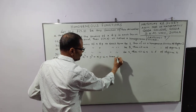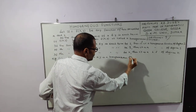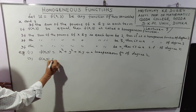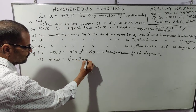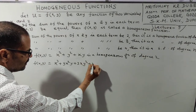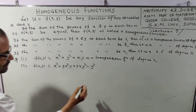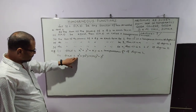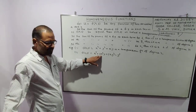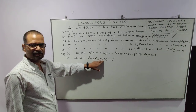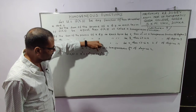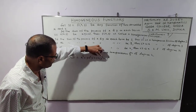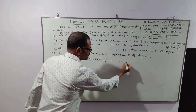For example, f(x,y) is equal to x cubed plus 3x squared y plus 3xy squared plus y cubed. This is also a homogeneous function of degree 3. Because in each term: in the first term, the power of x is 3; in the second term, the sum of the powers of x and y is 2 plus 1, that is 3; in the third term, the sum of the powers of x and y is 1 plus 2, that is 3; and in the fourth term it is also 3. So in each and every term, the sum of the powers of x and y is 3. So this is a homogeneous function of degree 3.